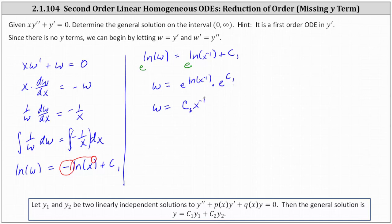So now that we have w, and we know w is equal to y prime, we can integrate c sub two x to the power of negative one with respect to x to determine the general solution y. This gives us y(x) equals the integral of c sub two x to the power of negative one dx, or the integral of c sub two times one divided by x dx. And therefore the general solution is c sub two natural log x plus c sub three.